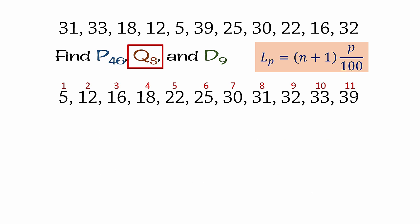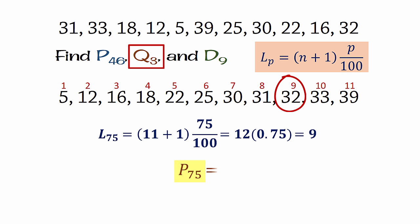For Q3 or the 75th percentile, the locator is 12 times 0.75, which is 9. So the 75th percentile is the 9th value here, which is 32.